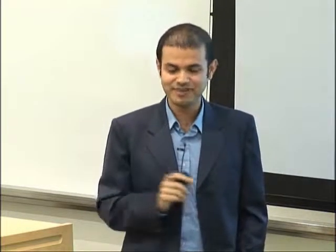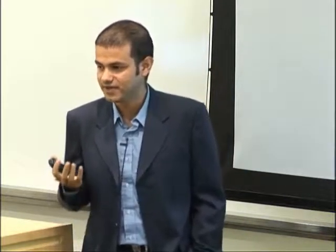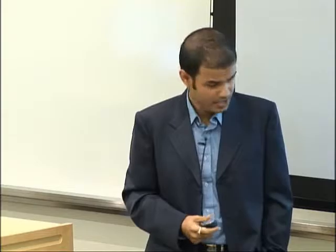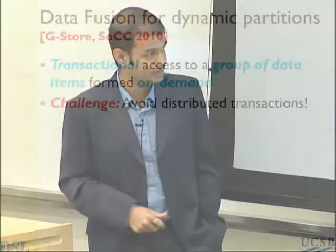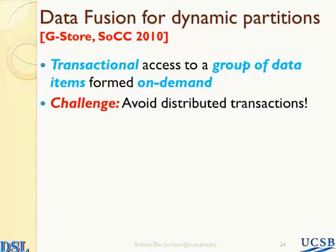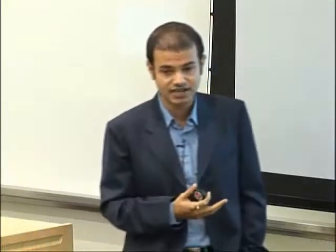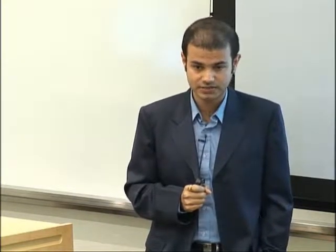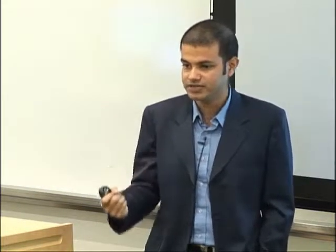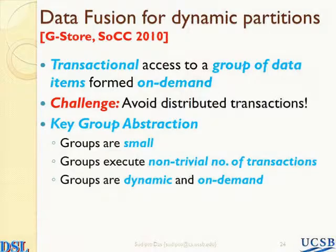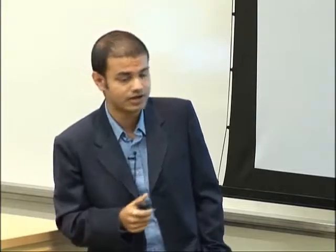In addition, if your game becomes popular, you have to deal with the challenge of hundreds of thousands of concurrent game instances or groups being formed. How do you deal with the scale problem in addition to the dynamicity? To restate the problem statement: we want transactional access over groups of data items, and we want to avoid doing distributed transactions in doing that. This is a pretty hard problem because the application is not trying to help me, so what I'd suggest is exposing an abstraction to the application to help.